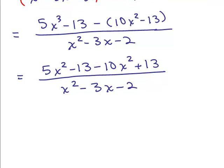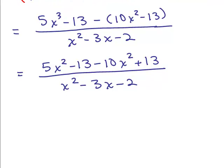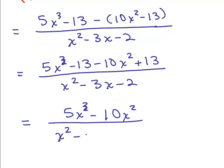Okay, now what's our next step? So we've just subtracted the numerators but we haven't simplified the numerator, so I have to combine like terms. Let's see, the 13's cancel because I have a negative 13 and a plus 13, so I have 5x squared—oops, 5x cubed, I copied that wrong—5x cubed minus 10x squared for my numerator, and for my denominator I have x squared minus 3x minus 2.